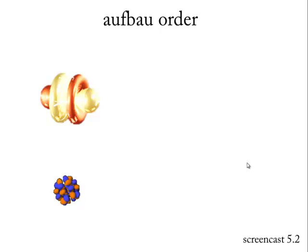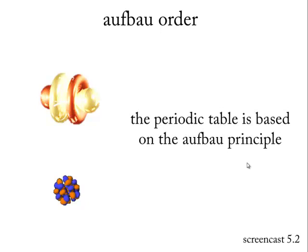This is known as Aufbau-Order, German for build-up. And the periodic table is based on the Aufbau-principle. We're going to show you how these electrons fill up in a very predictable order. So predictable that we would easily be able to predict where the electrons are in an element that has yet to be discovered. This is ScreenCast 5.2.